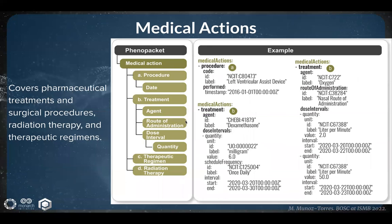This is the representation of a medical action in a phenopacket. This element covers pharmaceutical treatments, surgical procedures, radiation therapy, and therapeutic regimens. On the left, we see the components of the medical action in the phenopacket, and on the right, an example using COVID-19 medical actions. The implantation of a left ventricular assist device in 2016 gives us past medical information that is important as it represents a risk factor for severe COVID-19 infection. Then the intravenous administration of dexamethasone, and the provision of oxygen by nasal cannula at an initial dose of two liters per minute that was later increased to 50 liters per minute. In general, a medical action consists of one of four options: procedure, treatment, therapeutic regimen, and radiation therapy. The phenopacket can include an arbitrary number of medical actions.